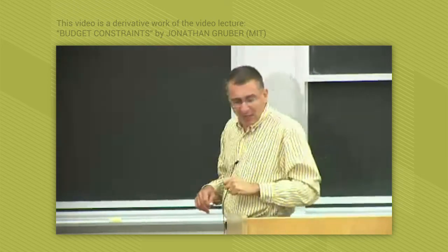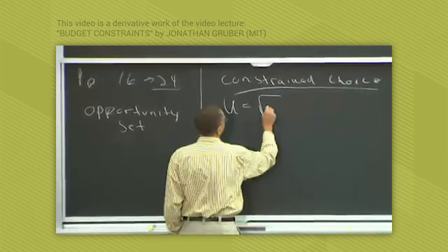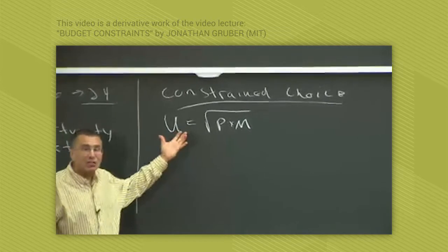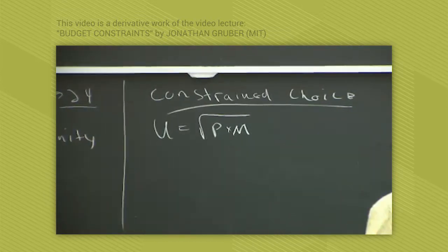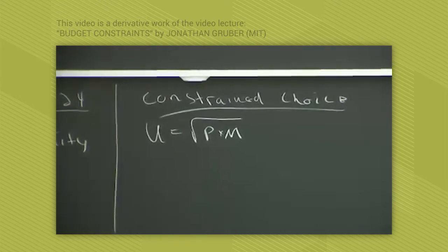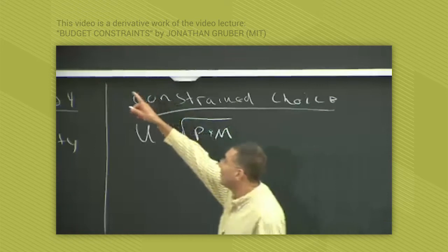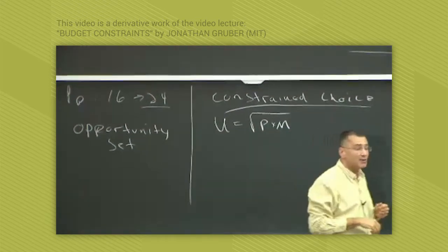So to do that, let's actually do an example. Let's imagine as last time, your utility is the square root of pizza times movies. Once again, this has no fundamental meaning. It's just a mathematical representation of your preferences. So your preferences are mathematically represented by utility equals square root of pizza times movies. And let's have the same budget constraint that we have up here. Income is $96, the price of movies is $8, the price of pizza is $16.